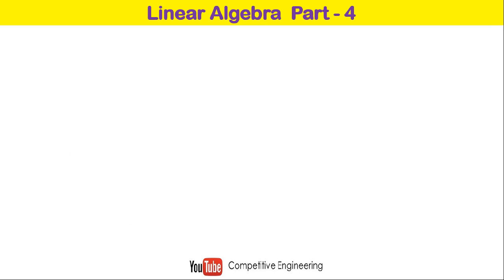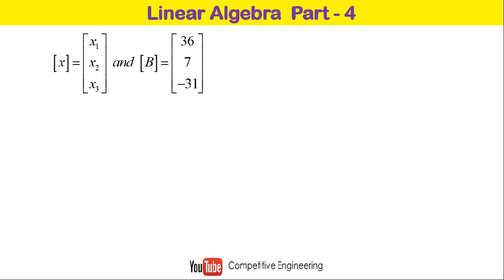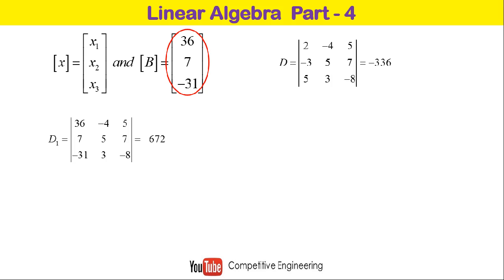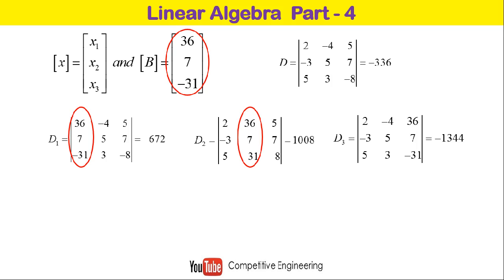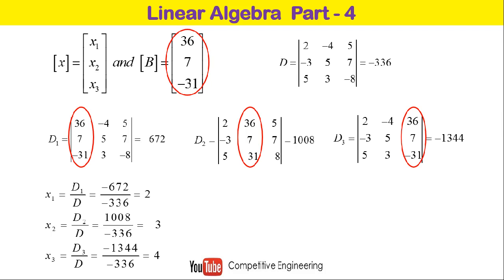Now we apply Cramer's rule. The right-side matrix b = [36; 7; −31] and D = −336. For D1, replace the first column with b: determinant = −672. For D2, replace the second column with b: determinant = 1008. For D3, replace the third column with b: determinant = −1344. Therefore: x1 = D1/D = −672/−336 = 2, x2 = D2/D = 1008/−336 = −3, and x3 = D3/D = −1344/−336 = 4.